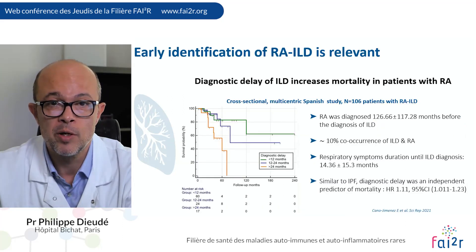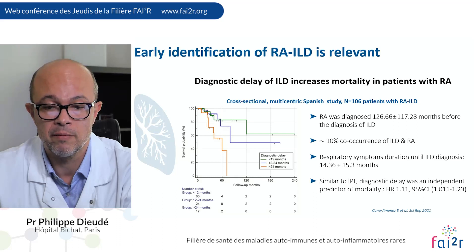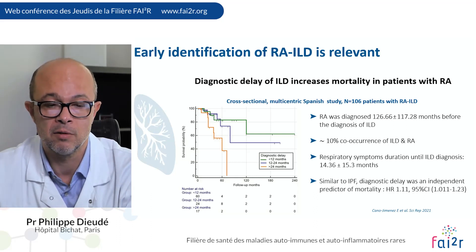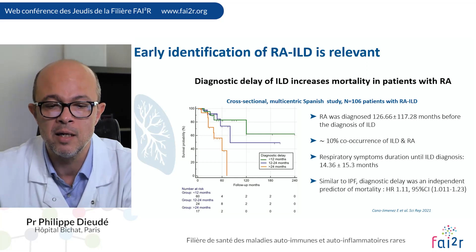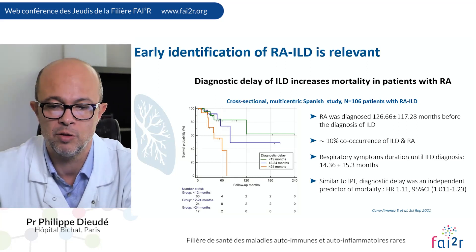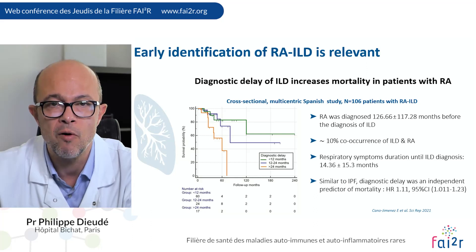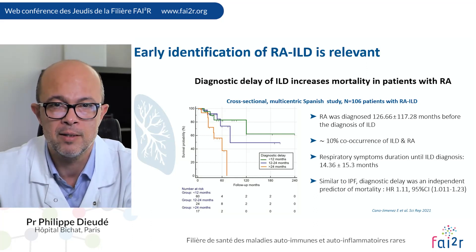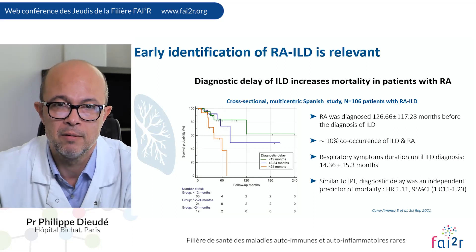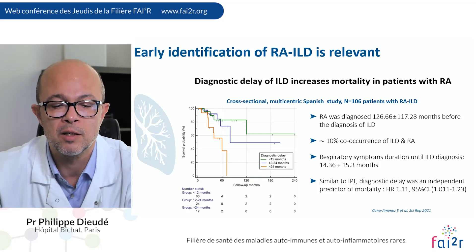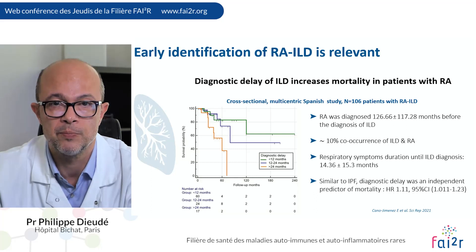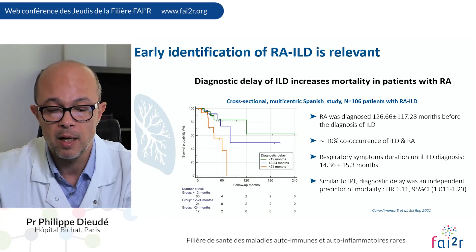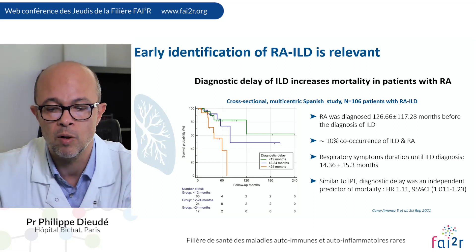So why is screening for asymptomatic RA-ILD relevant? The answer is coming from the study. The diagnosis delay for RA-ILD increases mortality in patients with RA. If you see the curve in orange, in patients having a delay of more than 24 months, the survival is very severe compared with patients in green who have a diagnosis delay of less than 12 months. And similar to IPF, diagnosis delay was an independent predictor of mortality with a hazard ratio of 1.11.